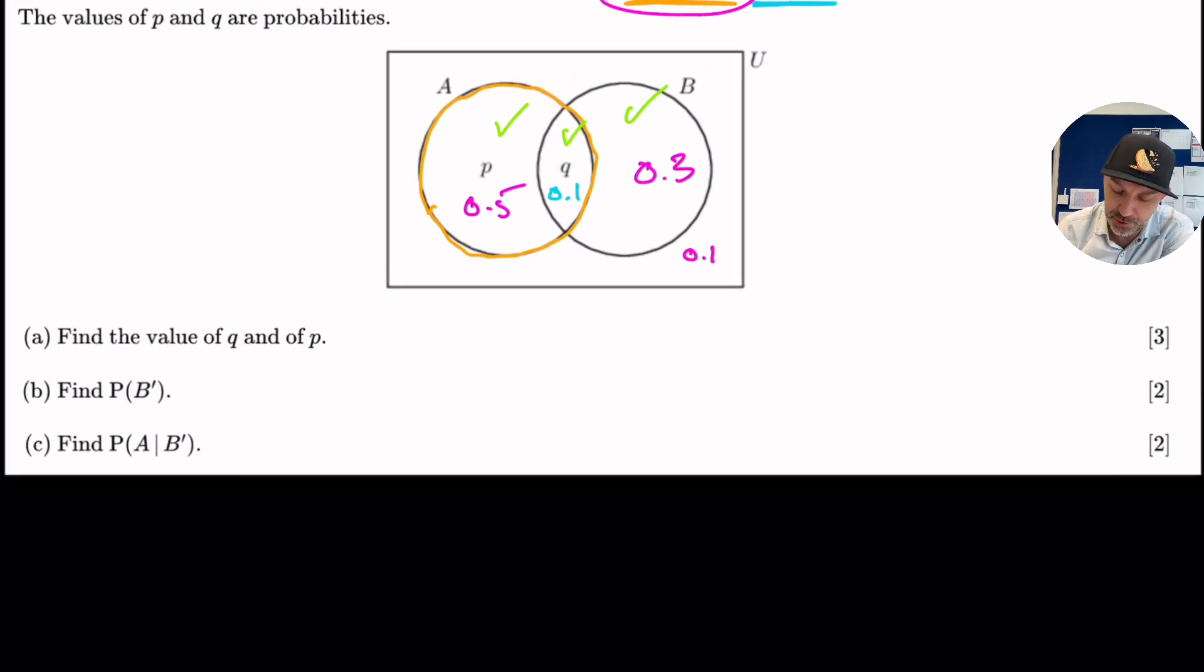So that means that's 0.1 because everything inside the universal set must add up to 1. Okay. So find the values of Q and P. Values of Q is equal to 0.1 and the value of P is 0.5. So we've solved that part of the question.